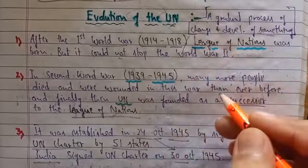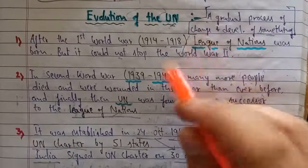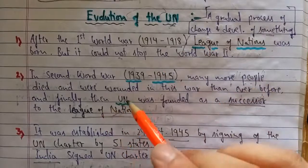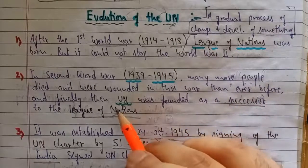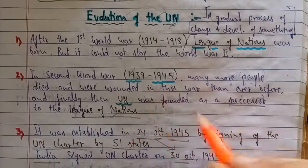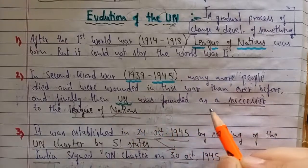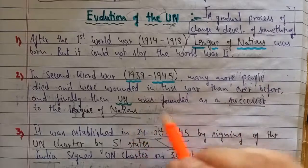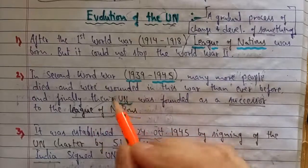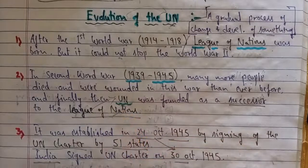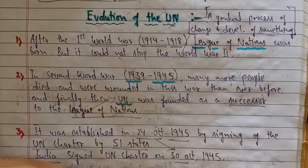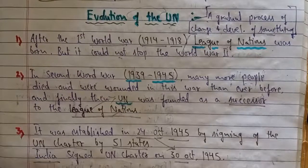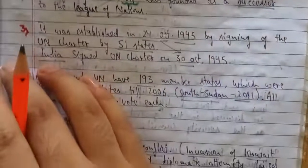In the Second World War, compared to the First World War, more people died, more were wounded, and there was greater destruction economically and socially. Finally the UN was founded after the Second World War as a successor to the League of Nations. Its aims and objectives were also the same — that there may not be another World War, that is World War III. The basic objective was to maintain peace among the various countries of the world so that there may not be a Third World War.